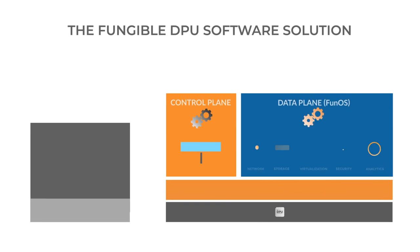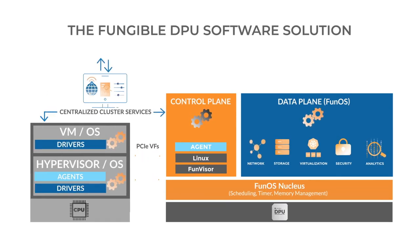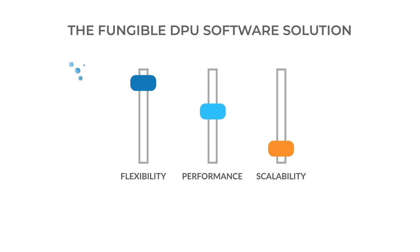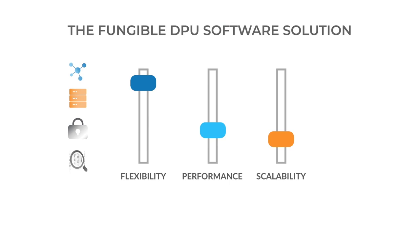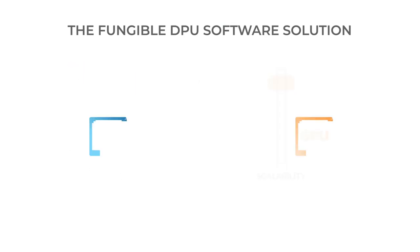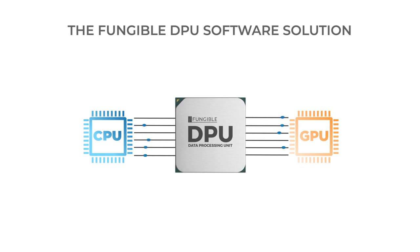The power of the Fungible DPU is clearly unleashed through its programmability. It offers flexibility comparable to general-purpose CPUs, processing all forms of data — networking, storage, security, analytics, and more — yet achieves performance comparable to ASICs. That makes the Fungible DPU truly unique and worthy of being the third socket in data centers, alongside the CPU and the GPU.